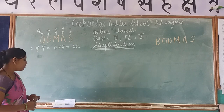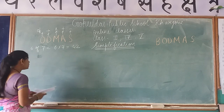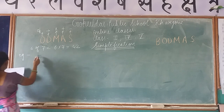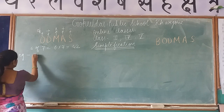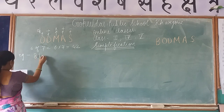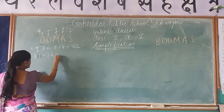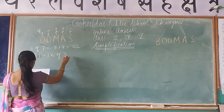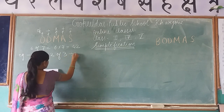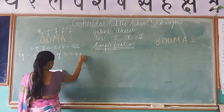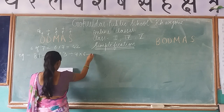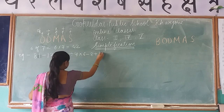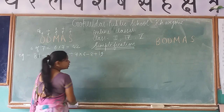I will solve one example. The example is: 81 minus 12 of 3 divided by 4 multiplied by 6 minus 8 plus 19.